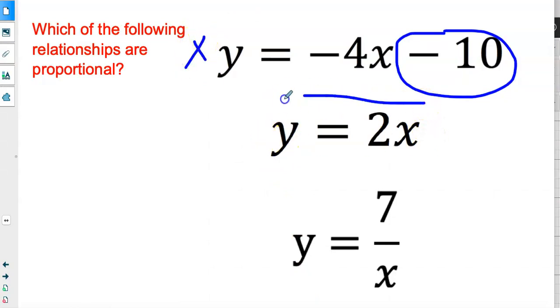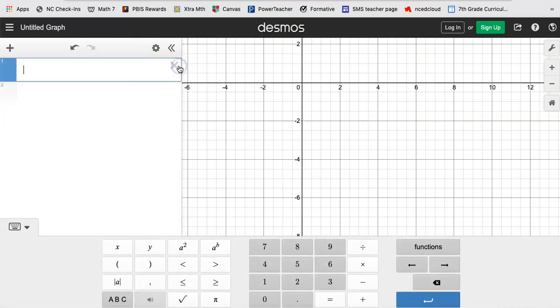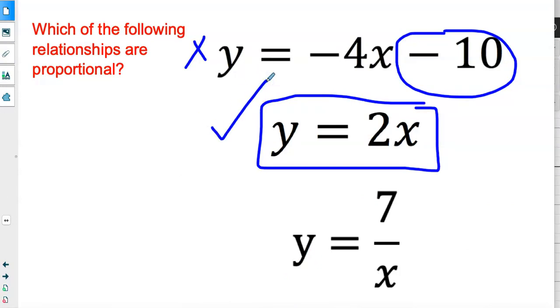y = 2x. That looks simple. It looks like y = kx. I think this one's going to be proportional. So let's graph it. y = 2x. And it is proportional. It goes through (0, 0) and it is a straight line. So I'm going to put a check. Yes, that's proportional.